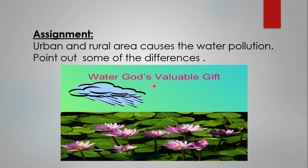Now there is an assignment for you. We have divided the areas into urban and rural — both cause water pollution. Imagine both and identify what is the difference in both areas. Like, factories are built in urban areas while these are rare in rural areas. Farmlands and agriculture work — these activities are done in rural areas. You can also point out what the sewage water from urban areas contains compared to the sewage water from rural areas.